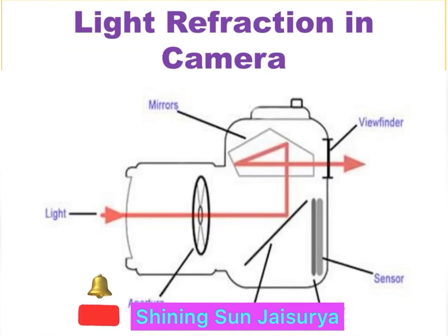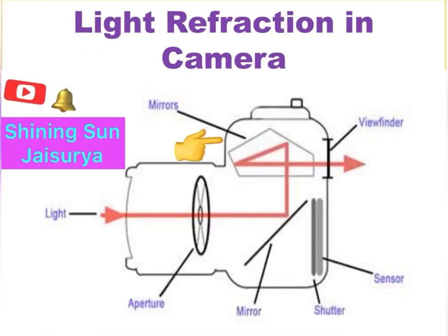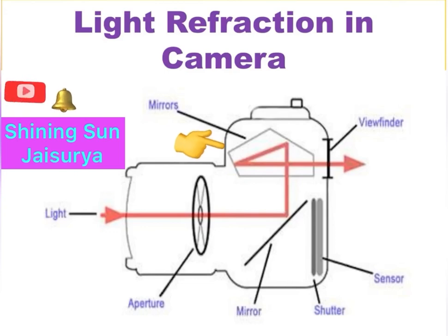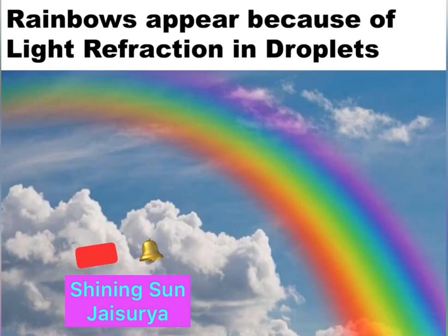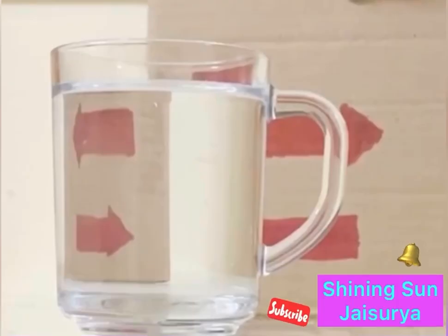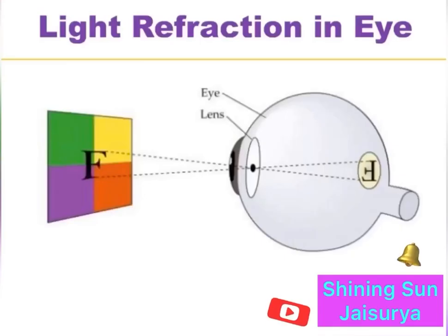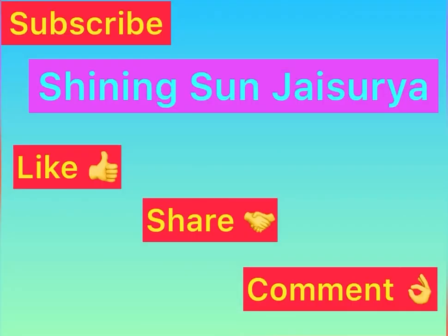Cameras also follow the same functioning. Back in cameras, through mirror refraction, we can see the object before taking photos. Mirages appear because of this refraction action only. In this experiment, we watched what light refraction is and how it's combined in our life.